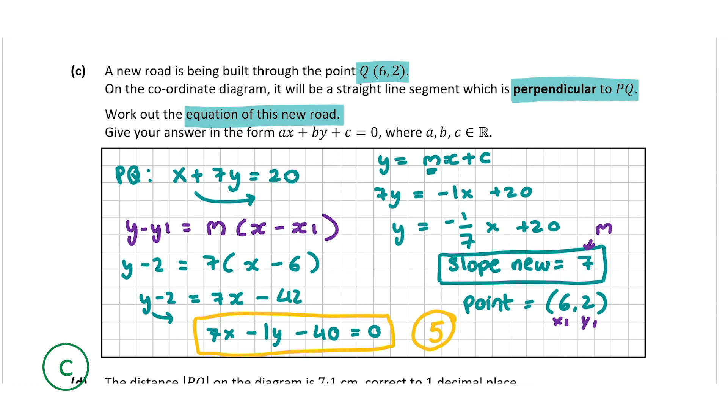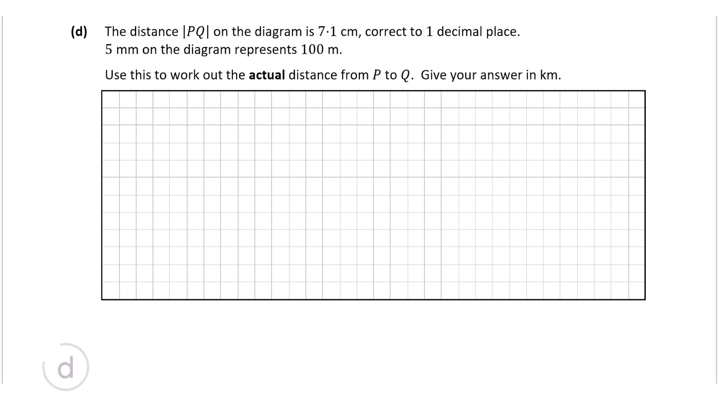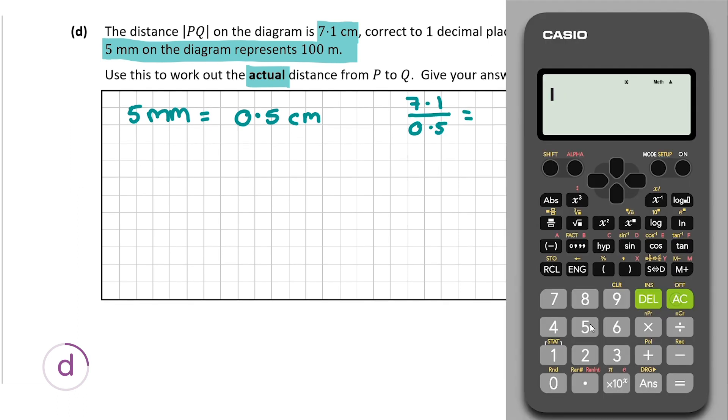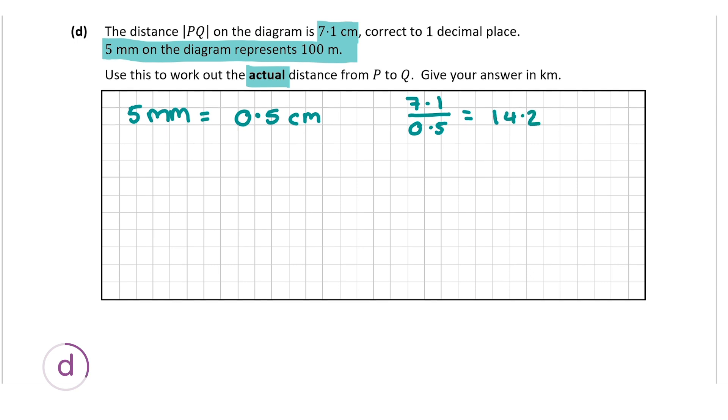Now let's move on to the last part of this question, question D. So in question D, we're told that the distance PQ on the diagram is 7.1 centimeters, correct to one decimal place. And we're told 5 millimeters on the diagram represents 100 meters. And we're asked to use this to work out the actual distance from P to Q and to give our answers in kilometers. So the first thing I'm going to do is work out how many 5 millimeters are there in 7.1 centimeters. So 5 millimeters = 0.5 centimeters. So let's find out how many 0.5 centimeters there are in 7.1 centimeters. So I'm going to go 7.1 ÷ 0.5. So that will give us 14.2. So there's 14.2 0.5 centimeters in PQ.